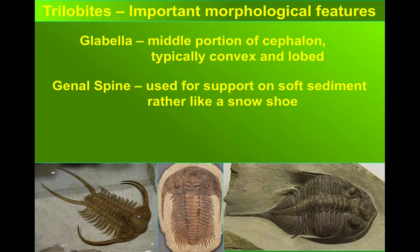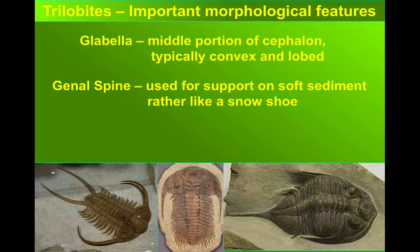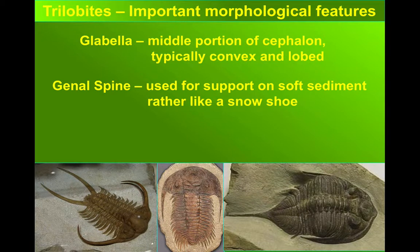The genal spines are these slightly enigmatic features that come off the trilobite's Cephalon. Their use is debated — whether they're used like a snowshoe support on soft sediment, as a defensive feature, or simply decoration, we don't know.